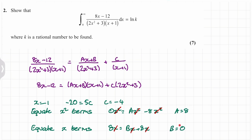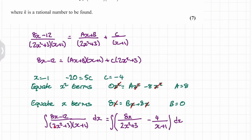We can substitute each of these values back into our partial fractions. So the integral of our original function equals the integral of our partial fractions. We'll worry about the limits after we've worked out the integral. We split this into two separate terms because we need to integrate them differently.